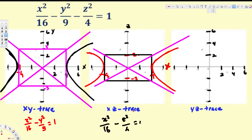Now for the YZ trace, we set x equal to zero. This gives us negative y² over 9 minus z² over 4 equals 1. This does not exist because the left side is always negative or zero — we'd need a square root of a negative value, which doesn't work. So the YZ trace does not exist.